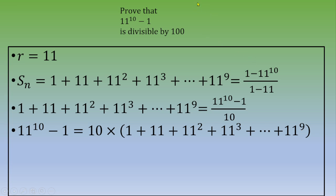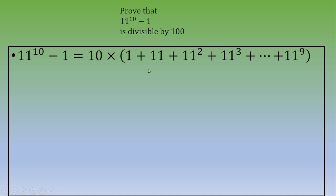We need to prove this number is divisible by 100. We already proved it is divisible by 10. Now let's focus on what is inside the parentheses. The number 1 ends in unit digit 1. The number 11 also ends in 1. 11 squared is 11 times 11 — a number ending in 1 times a number ending in 1 — so the result ends in 1.